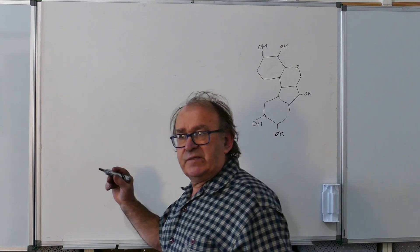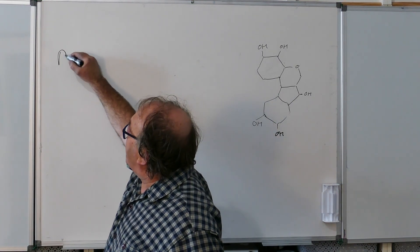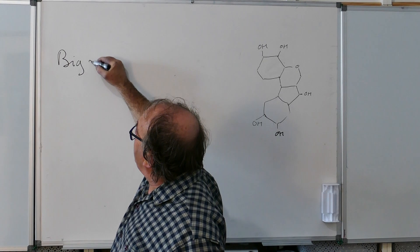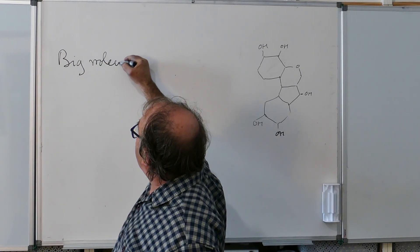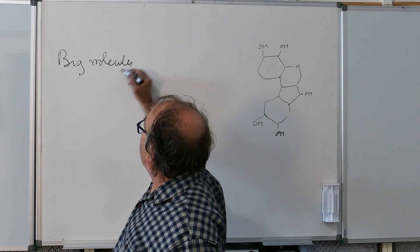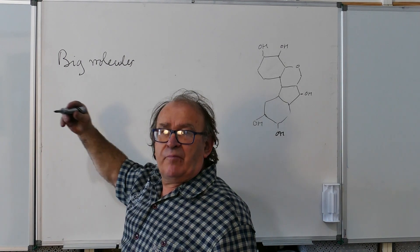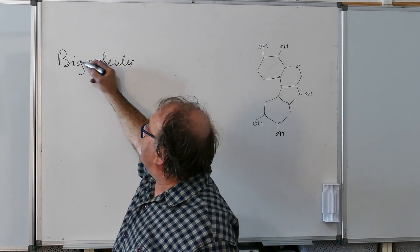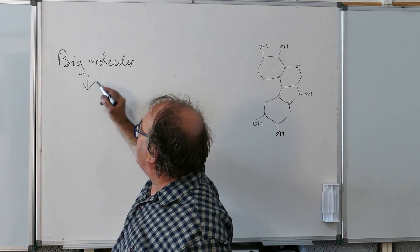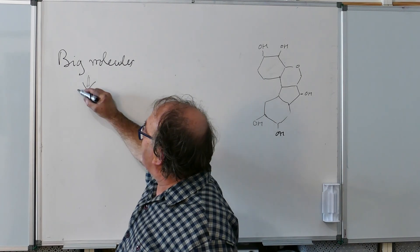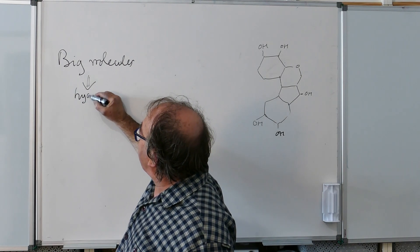Some tannins are very big molecules, I mean a very high molecular weight that under some condition they can break, they can hydrolyze. Small, acidic and colorless elements that could help to fix the colors on the textile.